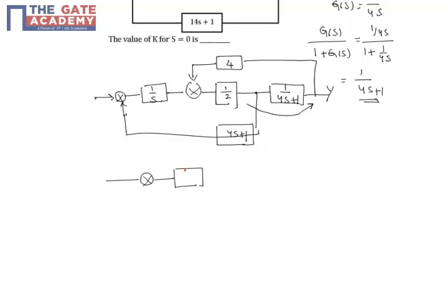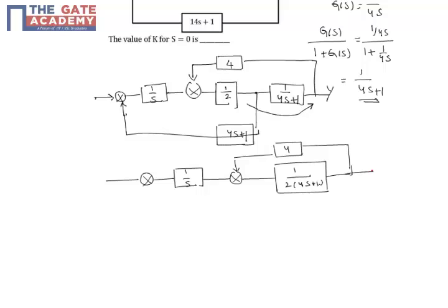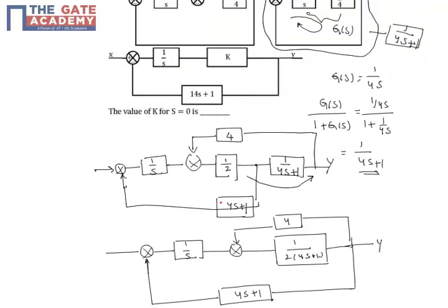After moving the point, we have a summing point, then 1 over s. These two combine to give 1 over 2 times 4s plus 1, and the feedback becomes 4. This is the output y. Since the point has been moved here, we multiply by 4s plus 1. Comparing with the given equation, g(s) equals 1 over 2 times 4s plus 1, and h(s) equals 4.